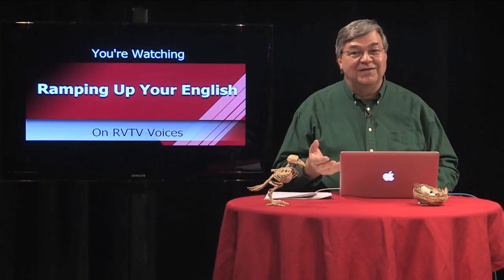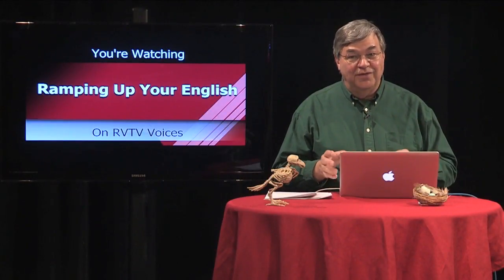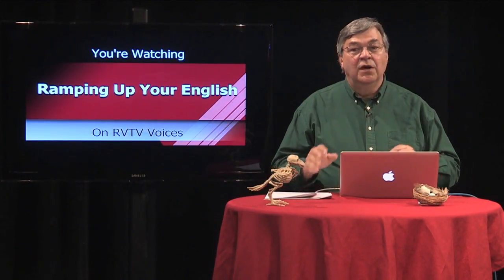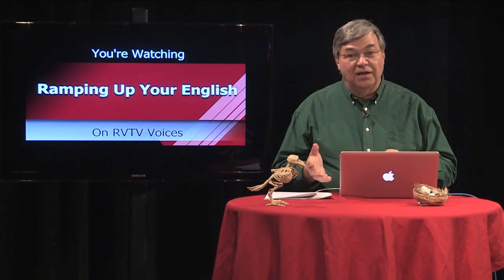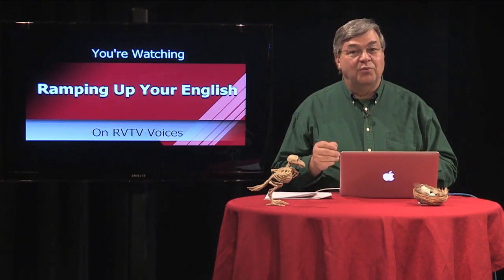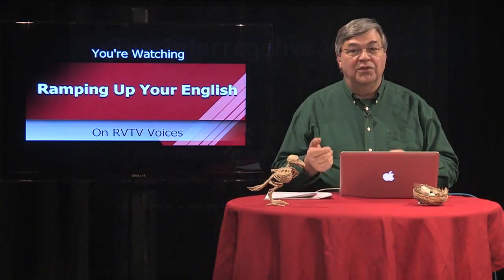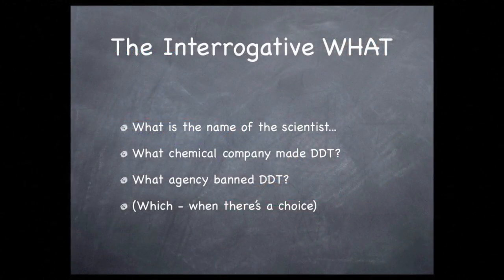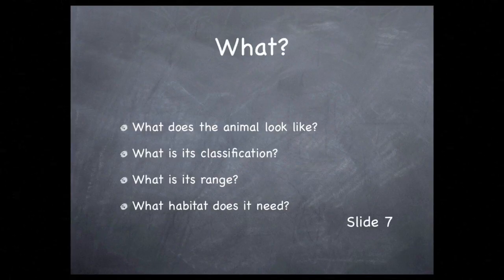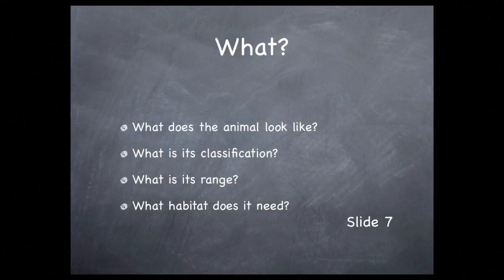Now, the interrogative what is one you'll use often, but it can be a little tricky sometimes. What can refer to a thing, living or non-living. The first question you probably answer when doing your report is: what animal will I research? The interrogative what can be used with all parts of the report. What does your animal look like? What is its classification? What is its range or distribution? What habitat does it need? Many general questions can begin with the word what.